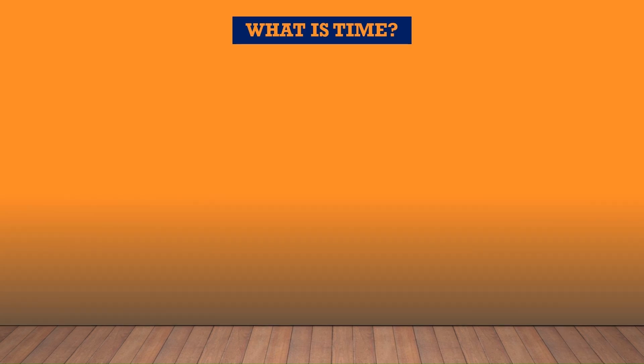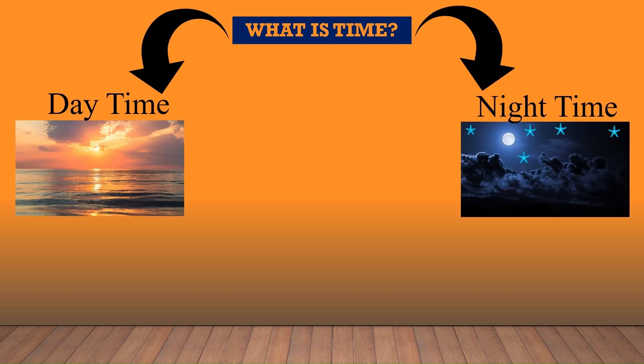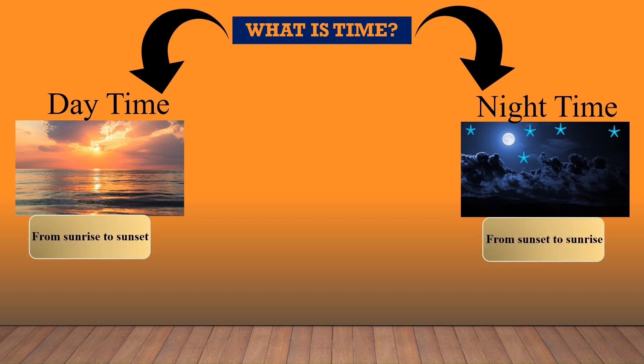Time is the way we measure the passing of events. It helps us organize our day and plan our activities. Time also helps us measure the duration of events and keep track of our daily activities. Time is divided into two parts: daytime and nighttime. From sunrise to sunset it is daytime, and from sunset to sunrise it is nighttime.